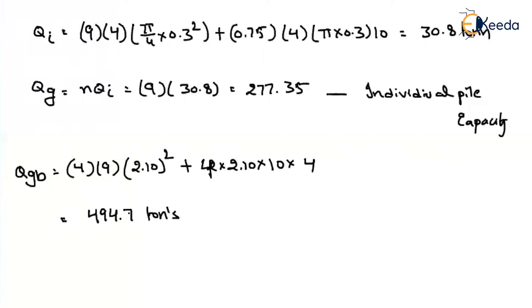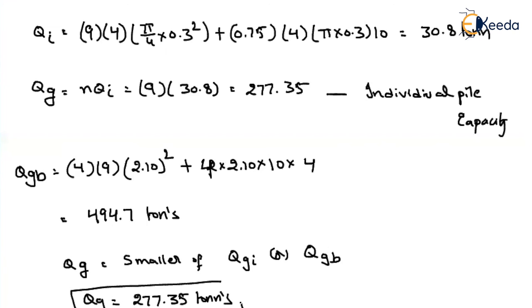So which is the least value? The least value is the ultimate capacity. That means group pile capacity will be equal to smaller of: group capacity individual piles, or group capacity for the block shear failure. What is the least value? 277.35. So the ultimate capacity is 277.35 tons based on the individual pile shear failure.